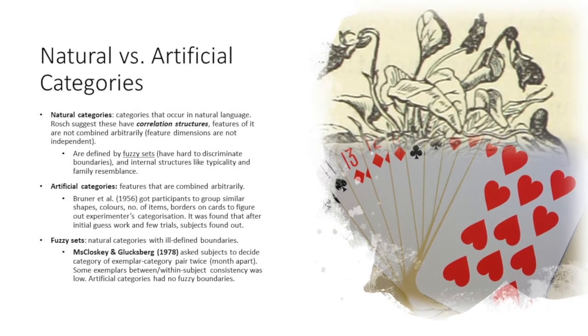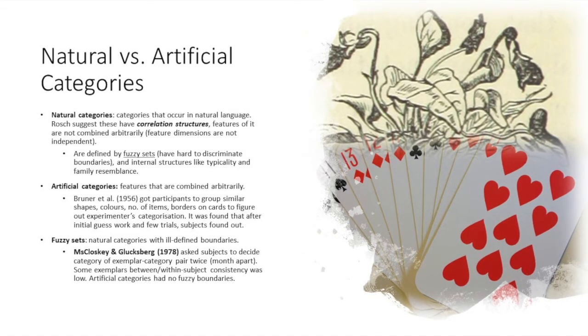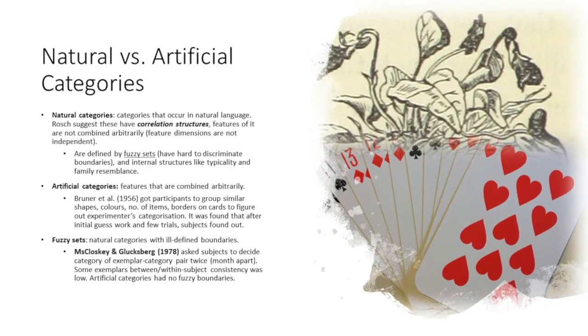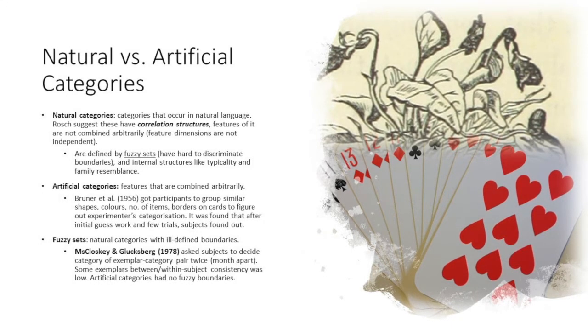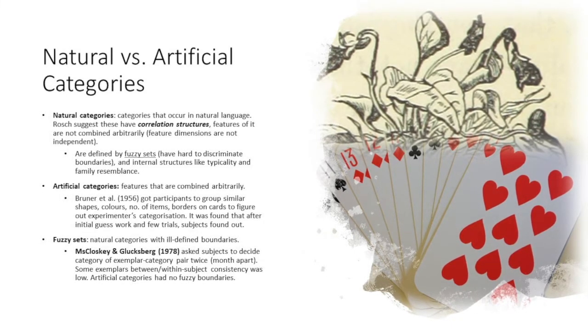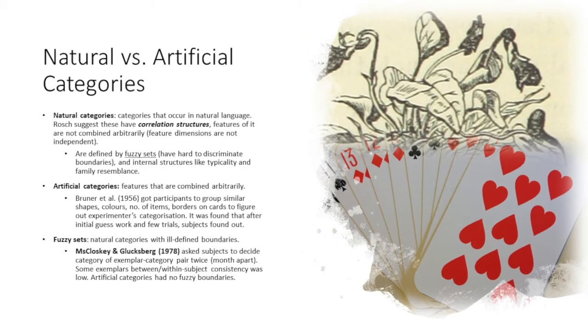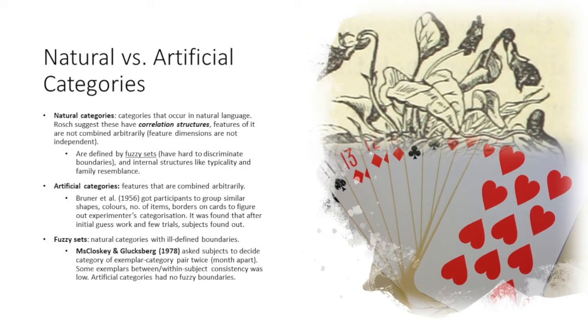This is similar to the idea of the prototype which I'll cover in the next few minutes. Some exemplars between and within subject consistency was low. This suggested that artificial categories have no fuzzy boundaries. They're not arbitrarily categorized.